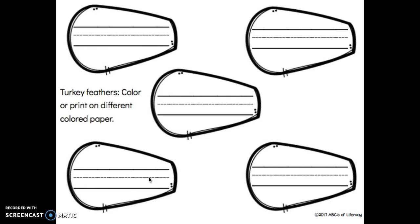You could say food, your house, your friends, or your teacher. Pick five things that you are most thankful for and write one on each feather.